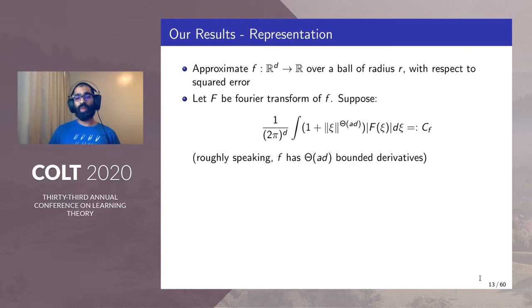For instance, made in Barron's classic paper on representation by sigmoidal functions. Roughly speaking, this means that f has θ(a·d) bounded derivatives.